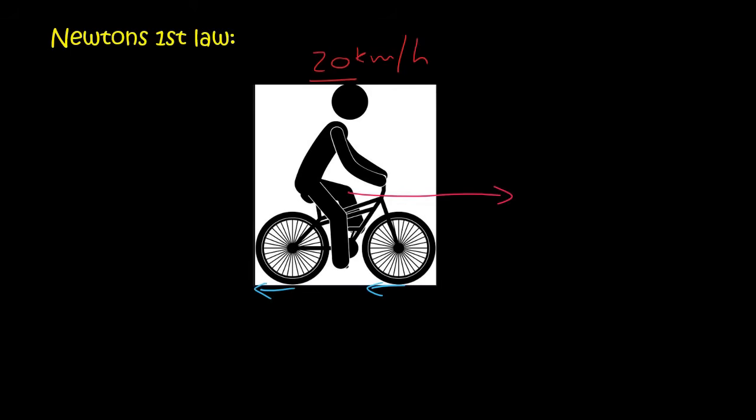If the pedals become more than the friction, then you'll start to speed up. Then your speed's going to start going 22, 23, 24, and so on.